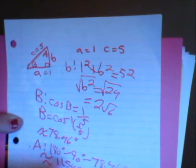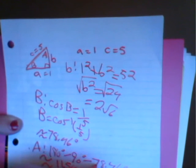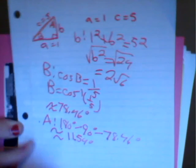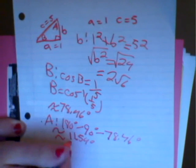To find angle A, we do 180 degrees minus 90 degrees minus 78.46 degrees, which equals 11.54 degrees.